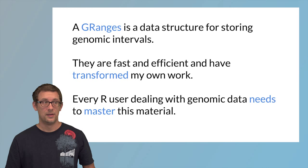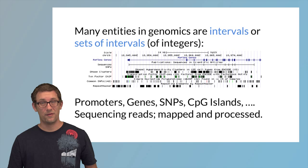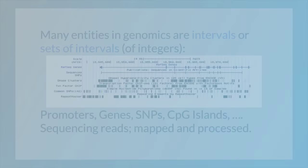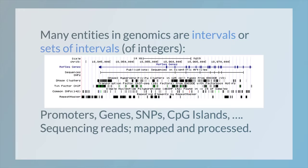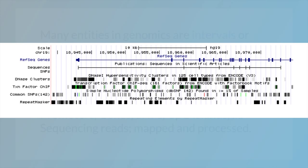So the key insight is that many entities in genomics can be thought of as intervals or perhaps sets of intervals of integers. Here's a screenshot from the UCSC Genome Browser. It's a somewhat randomly chosen gene, and we can see there are genes which are intervals.